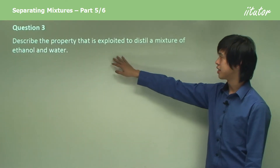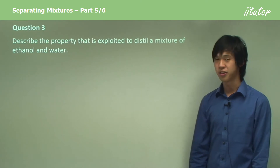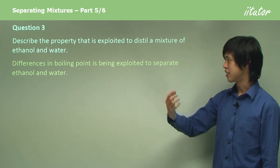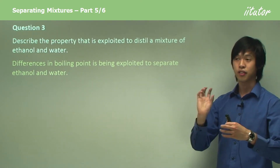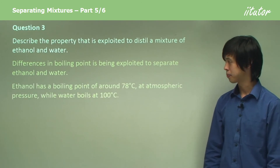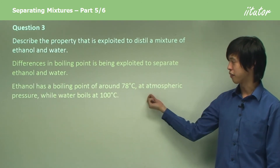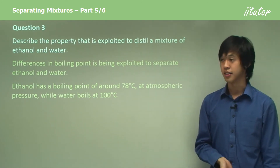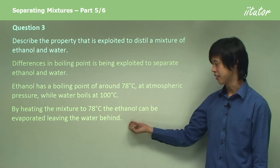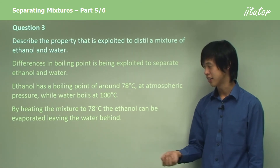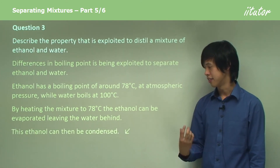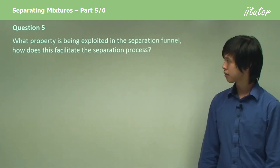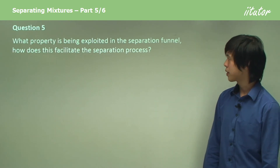To describe the property exploited to distill a mixture of ethanol and water: differences in boiling point are exploited to separate them. Ethanol has a boiling point of around 78 degrees Celsius while water boils at around 100 degrees Celsius. By heating the mixture to 78 degrees, the ethanol can be evaporated leaving the water behind, and then the ethanol can be condensed, separating the two liquids.